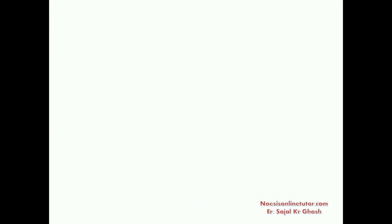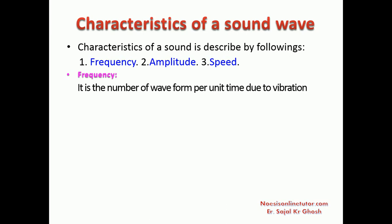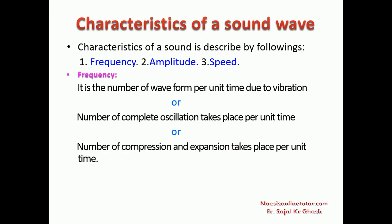The characteristics of a sound wave are described by three things: frequency, amplitude, and speed. Frequency is the number of wave forms per unit time. Due to vibration of any medium sound is produced, and the number of complete oscillations per unit time is also the frequency. It can also be defined as the number of compressions or expansions per unit time in a gaseous medium, because sound waves pass through a medium by means of compression and expansion. Frequency is equal to 1 divided by wavelength.